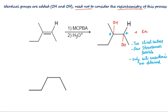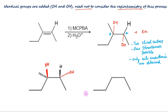That is, the OH groups will be added to opposite sides of the pi bond. In this one, if OH is shown above the plane, then this methyl will be down the plane. OH here will then be shown down the plane so that H will be above the plane. The second anti-enantiomer will have stereochemistry opposite to this one — OH here down the plane so that methyl is above the plane, and OH here above the plane so that H will be down the plane.